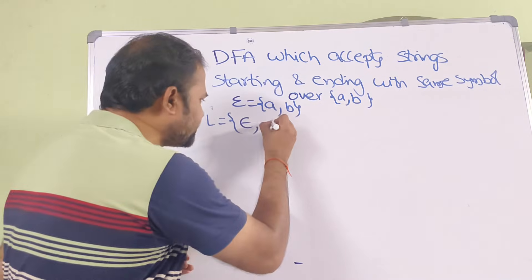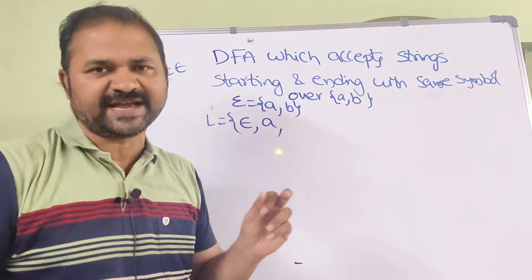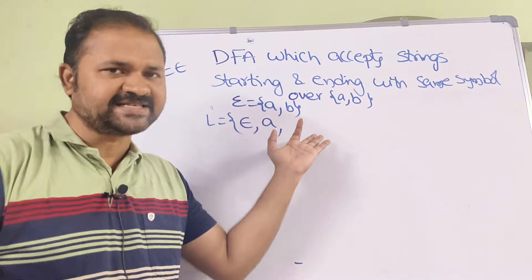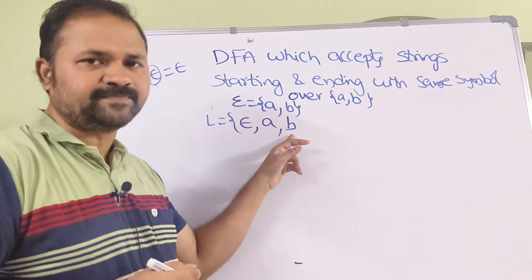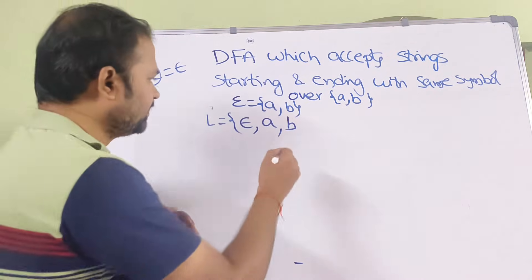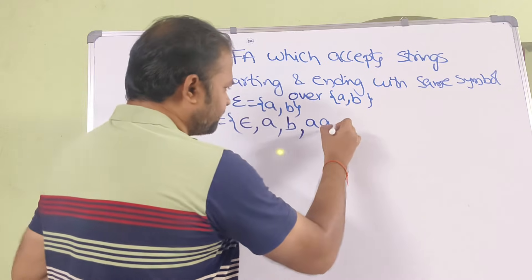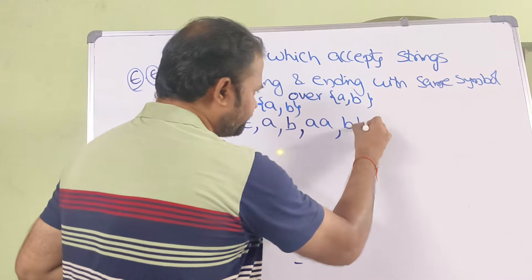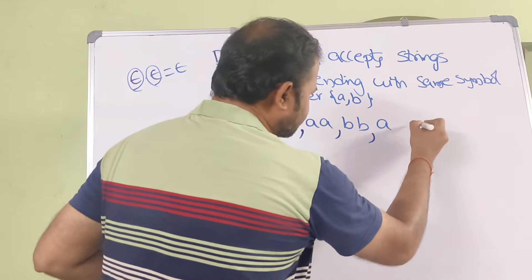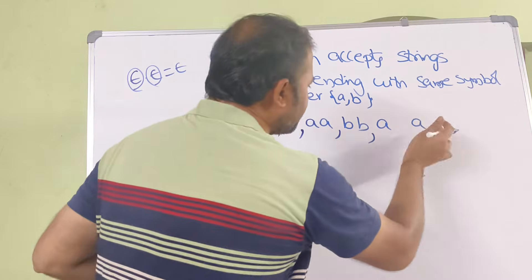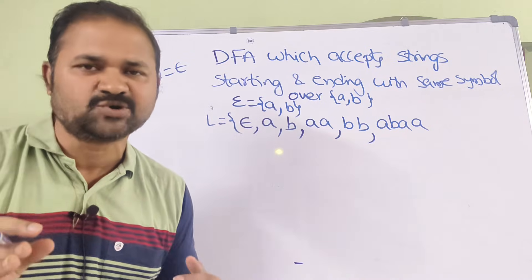The next string is A — it contains only one character, so it starts with A and ends with A. Next is B, which starts and ends with B. Next is AA — starting and ending with A. Next is BB — starting and ending with B. In general, between the first and last symbol we can have any number of A's and B's; there is no constraint on that.